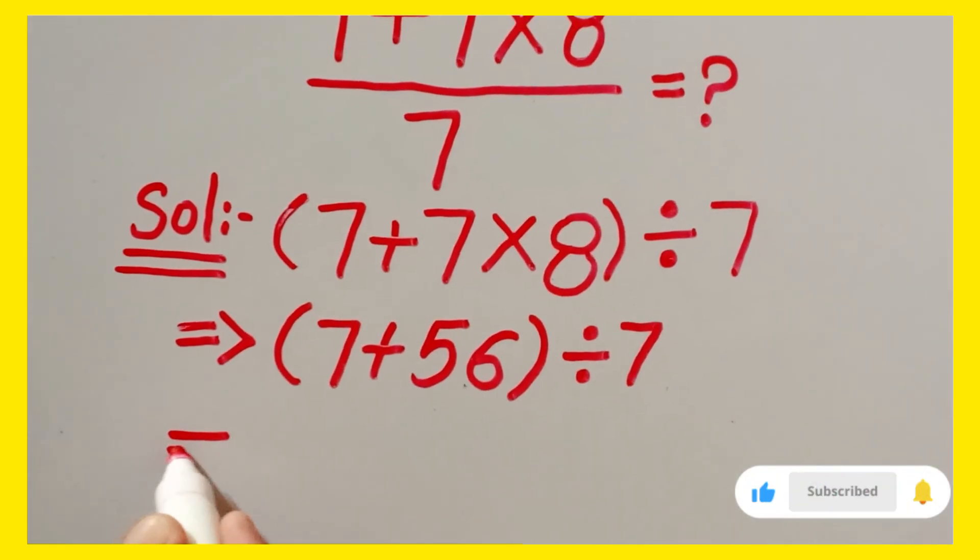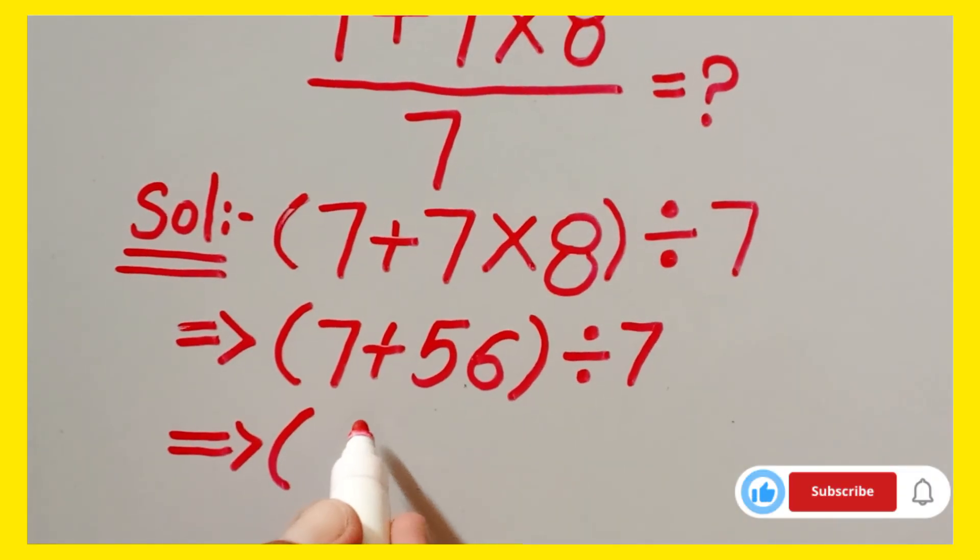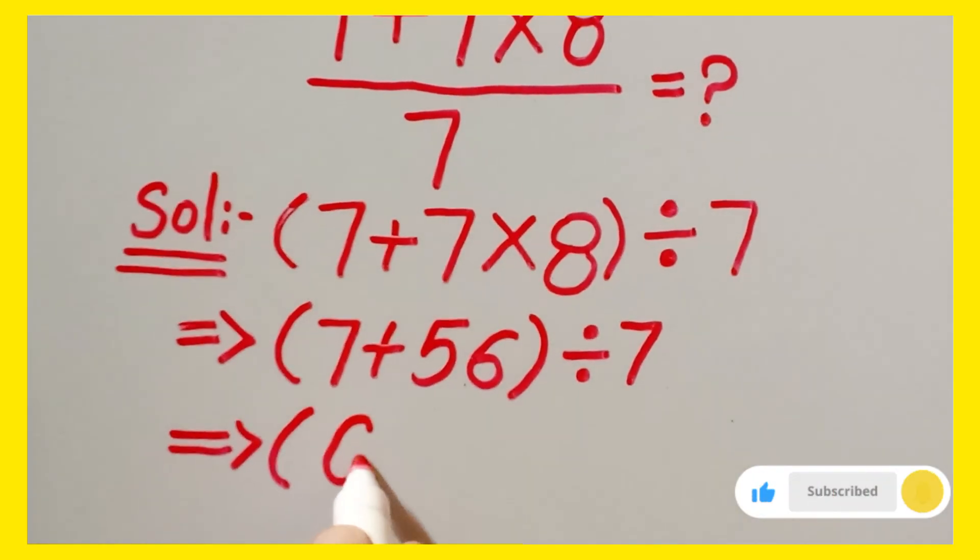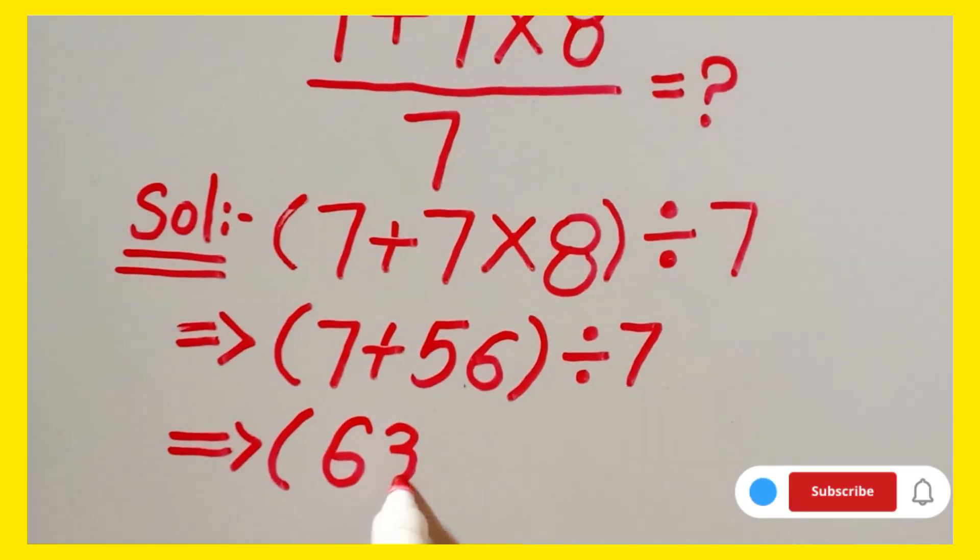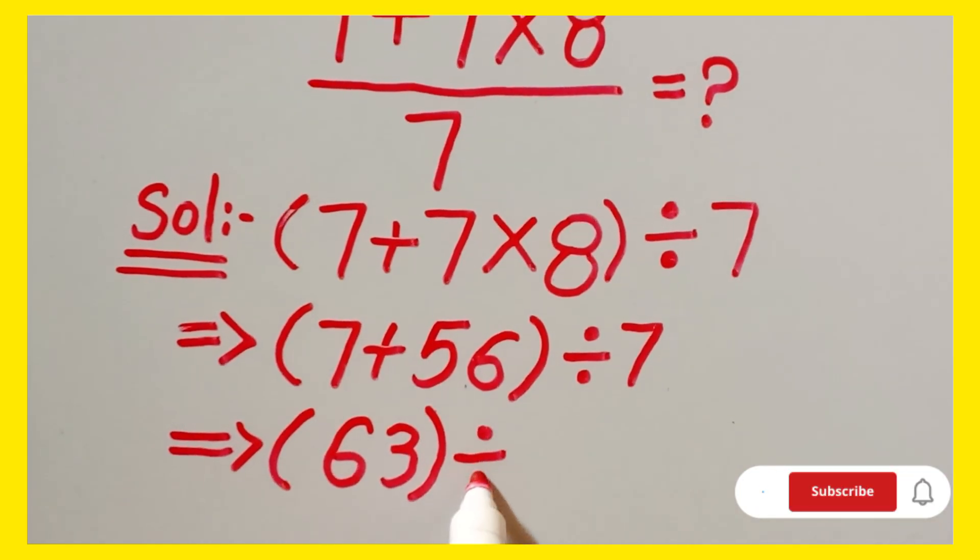7 plus 56 which is equal to 63, divided by 7.